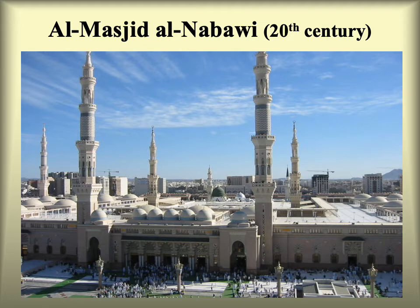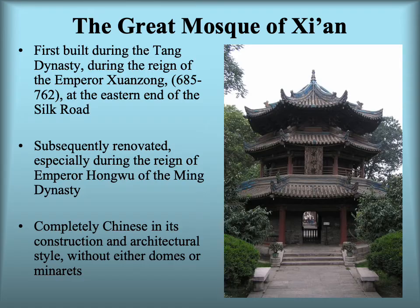There are usually certain common features, but there can be tremendous variation — even to the extent of not having a minaret — very often based on local culture and traditions. For instance, the Great Mosque of Xi'an was built in China during the Tang Dynasty at the eastern end of the Silk Road. It's pretty clear that this is heavily influenced by Chinese architectural styles, and there's not even a dome or minaret involved.